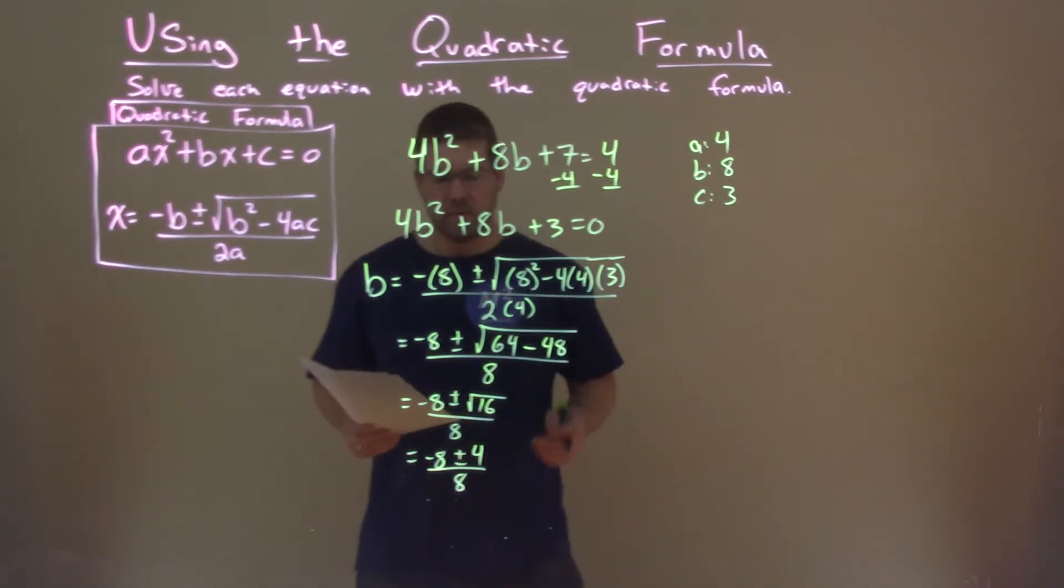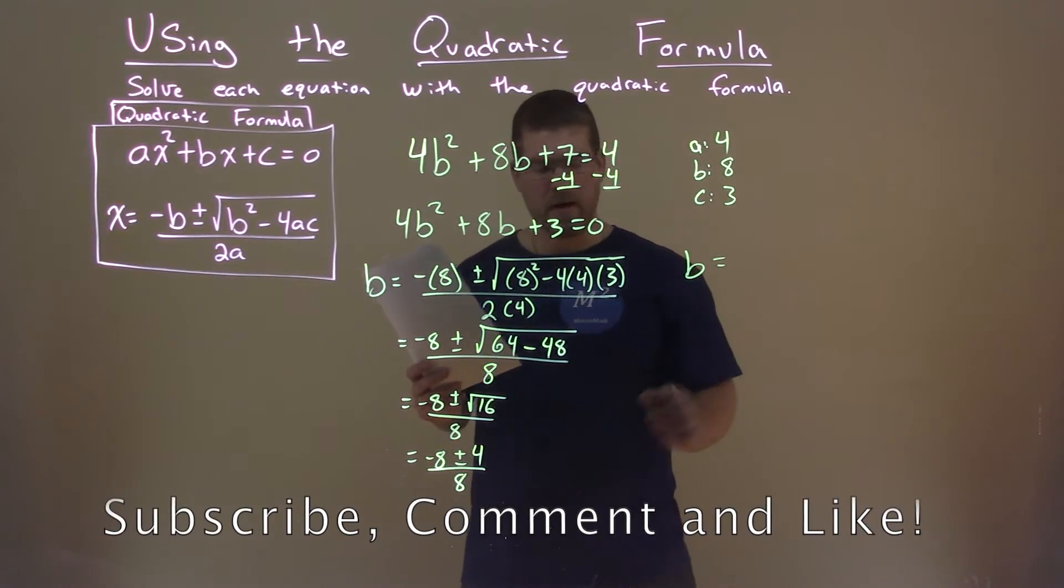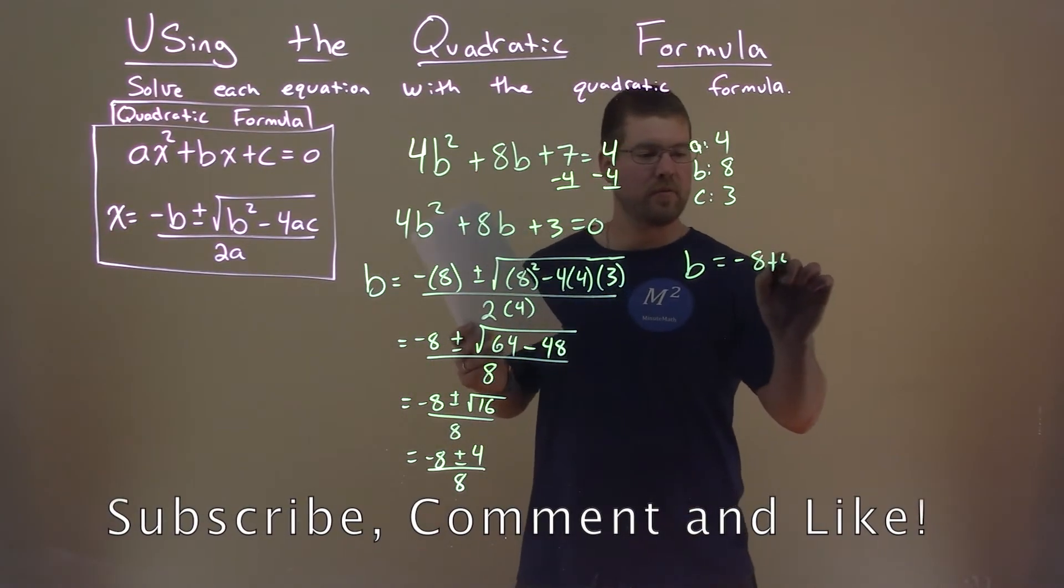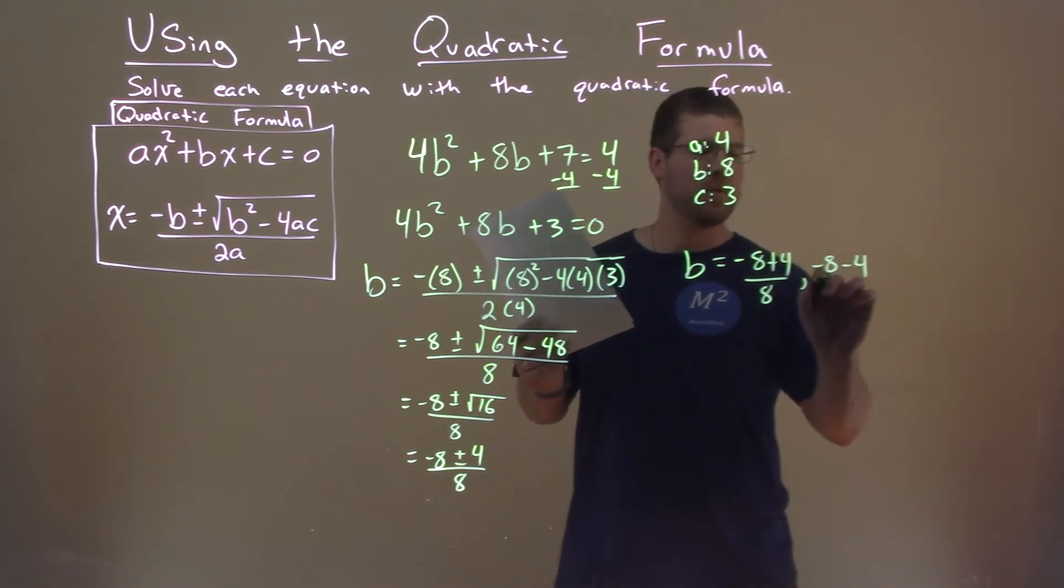So now we have negative 8 plus or minus 4 over 8, and we're going to break it up into the plus and the minus. So negative 8 plus 4 over 8, and negative 8 minus 4 over 8.